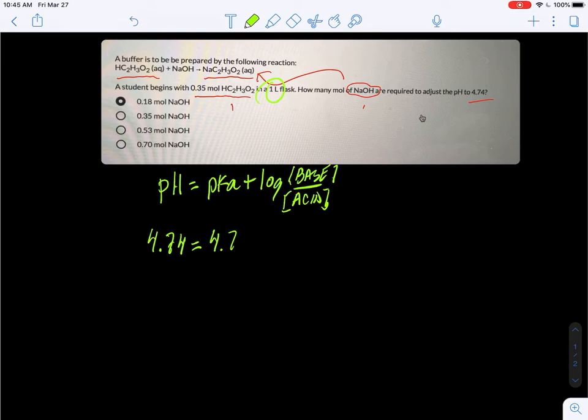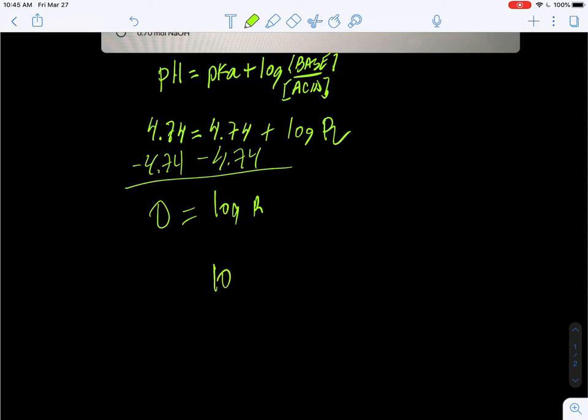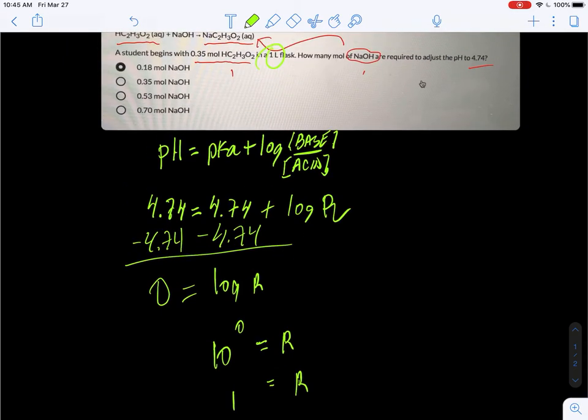I'll just call this R for ratio. You subtract 4.74 from both sides and you get zero is equal to log of the ratio. When you do the antilog, 10 to the zero is equal to R, and that's equal to one. The log of one is zero.